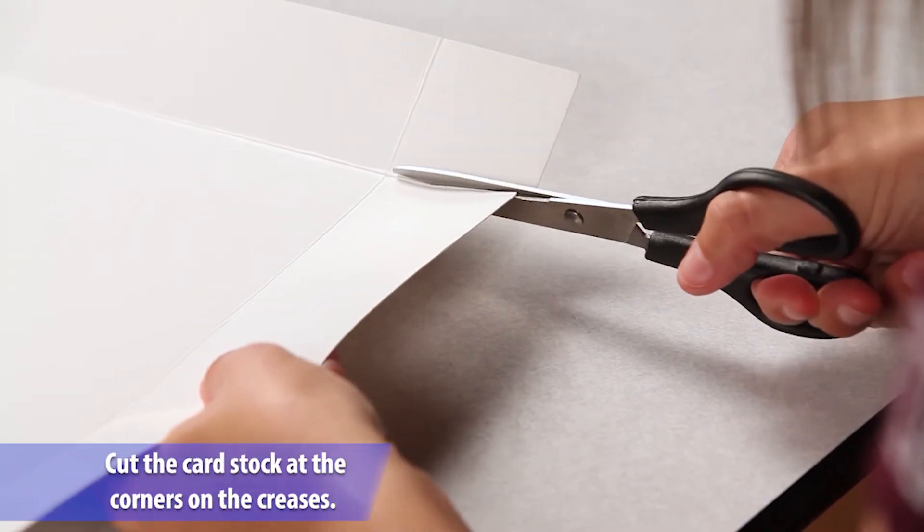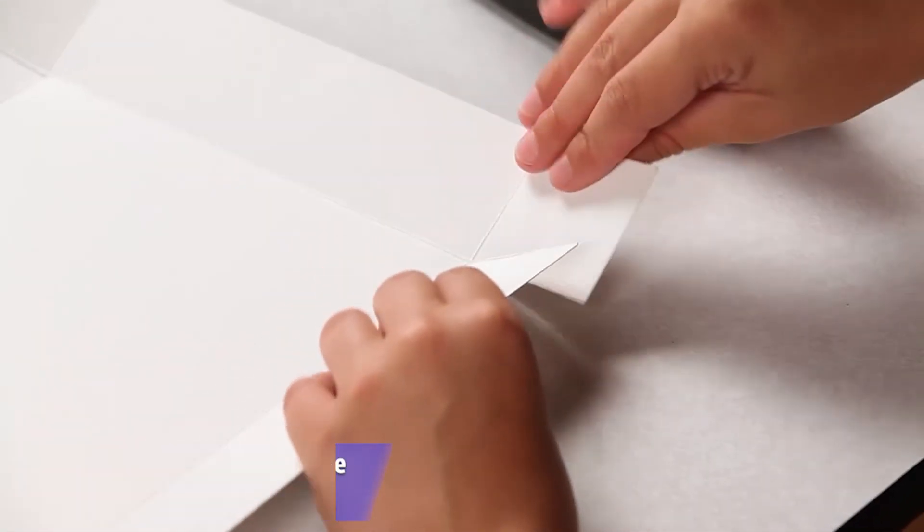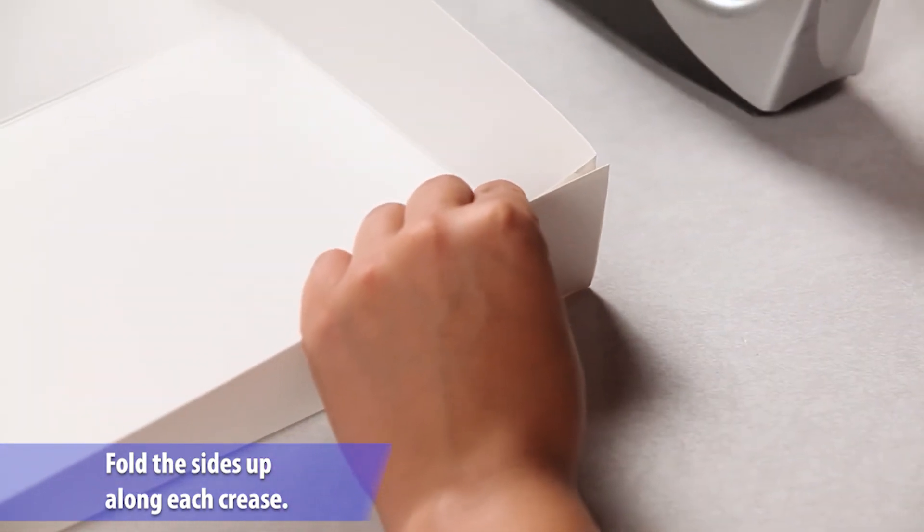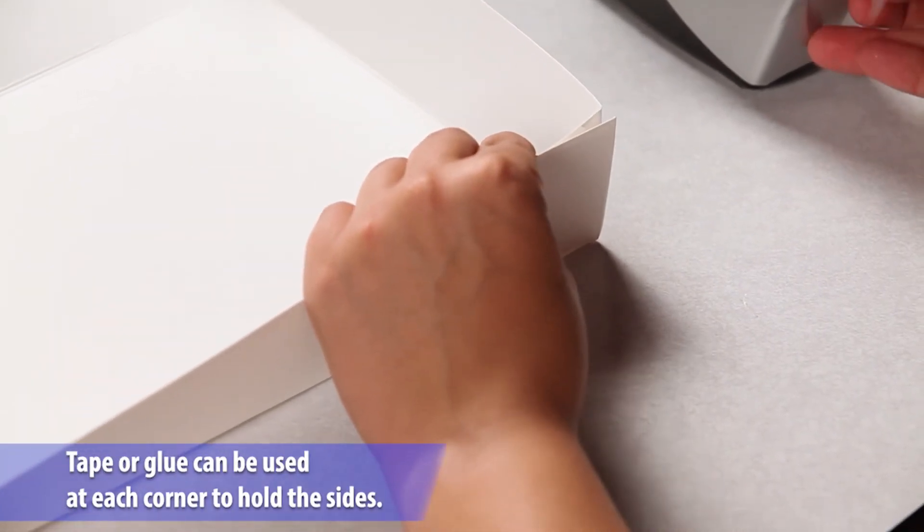Then, cut the tabs at each corner. Fold the sides up along each crease. Lastly, use tape or glue to hold the sides together.